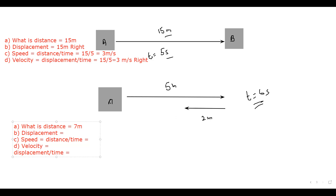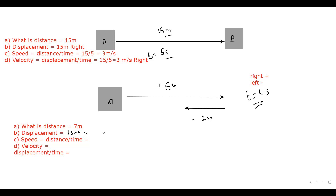What about displacement? Since it's a vector quantity and direction changes, consider right as positive and left as negative. So the displacement is plus 5 minus 2 — sorry, it moved 5 right and came back 2 — so plus 5 minus 2 equals plus 3 meters. Since plus 3 is positive and positive is towards the right, displacement is 3 meters towards the right-hand side.